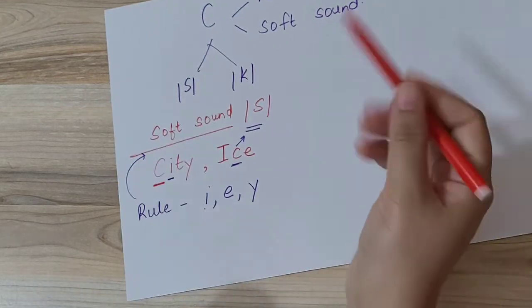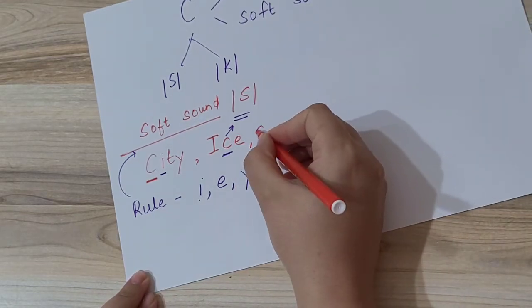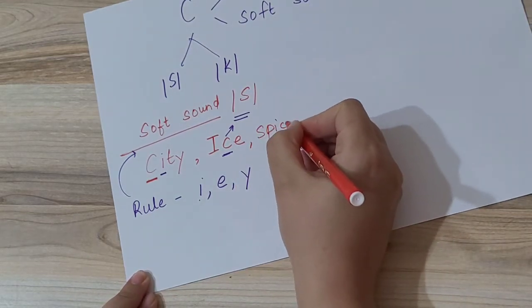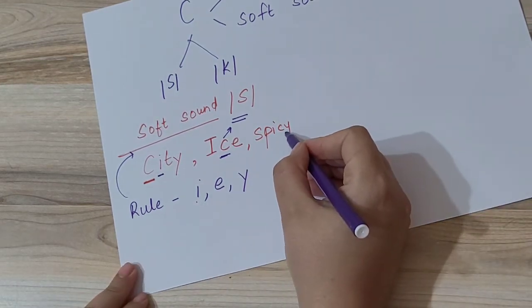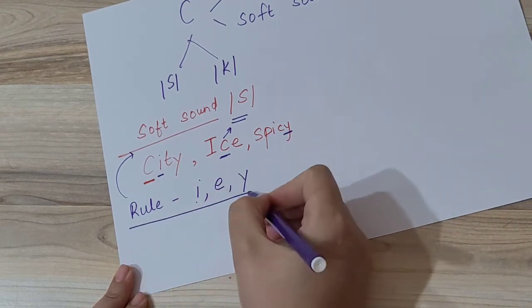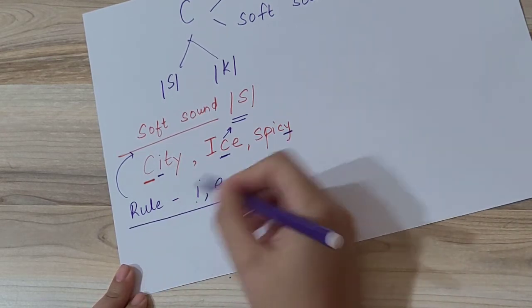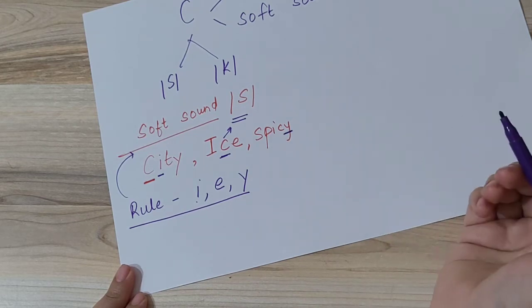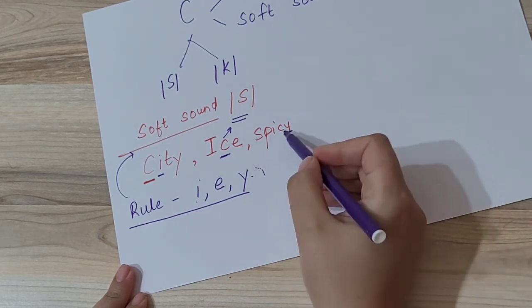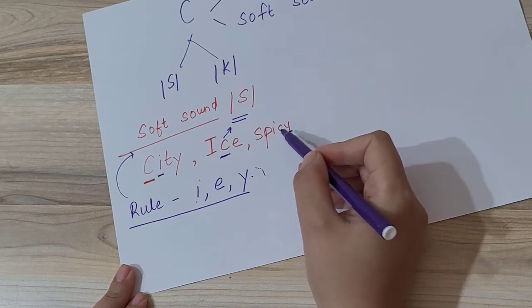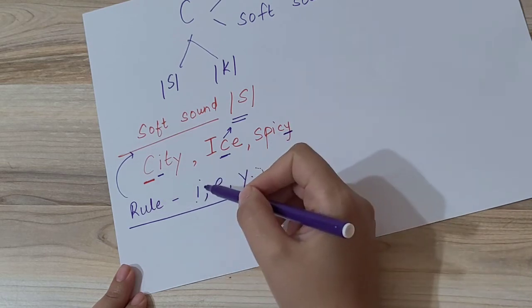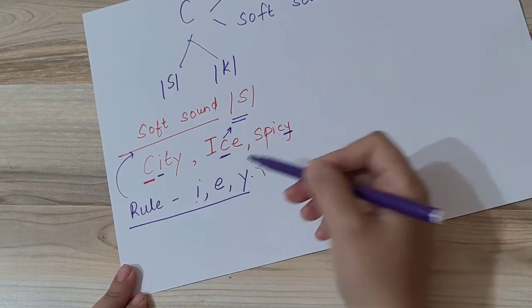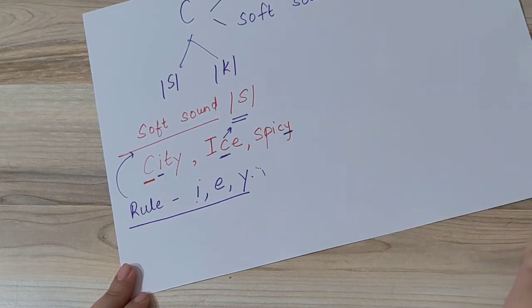One more word we can see: Spicy. In this, C ke baad Y is coming. As per the rule, C's soft sound we have to pronounce because Y is coming after letter C. As per the rule we have learned, if C is followed by I, E, or Y, then we have to pronounce its soft sound, that is 'sa'.